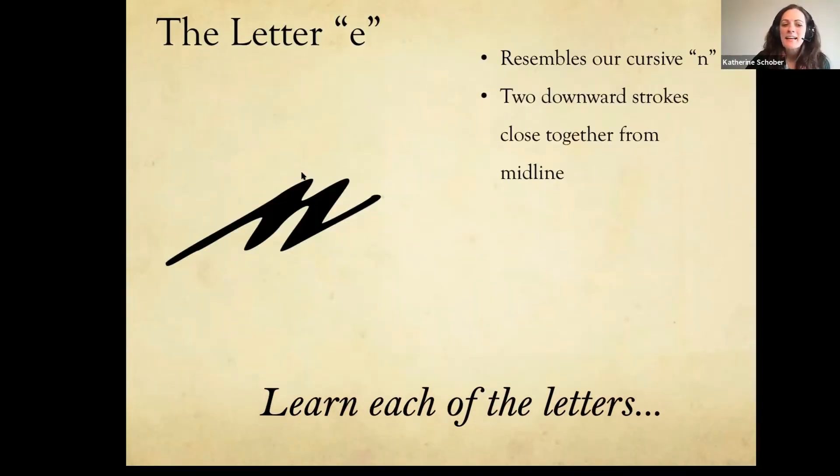Yes, the e has two strokes close together from the midline. So this is the midline here and it's two downward strokes here. It's one of the most common letters in German, so like I said, you will see this a lot.